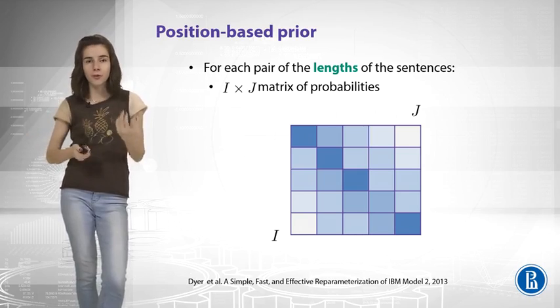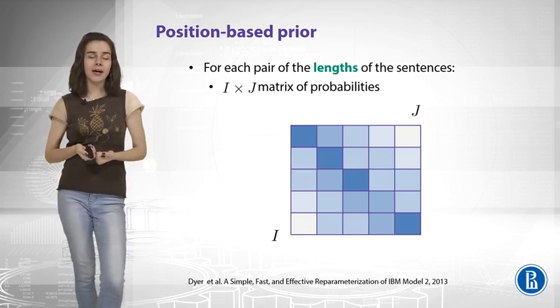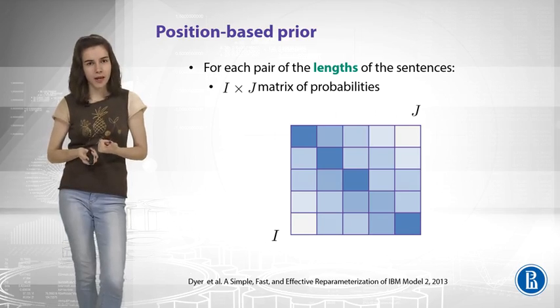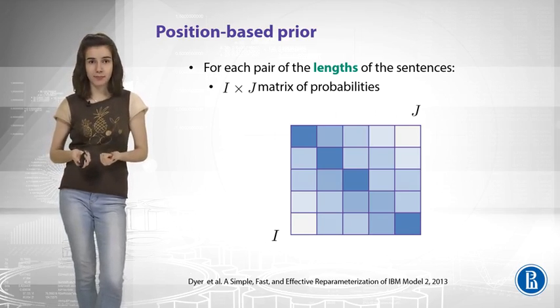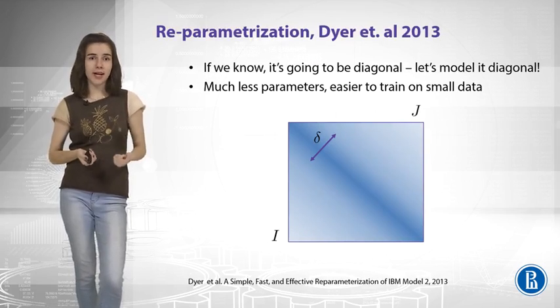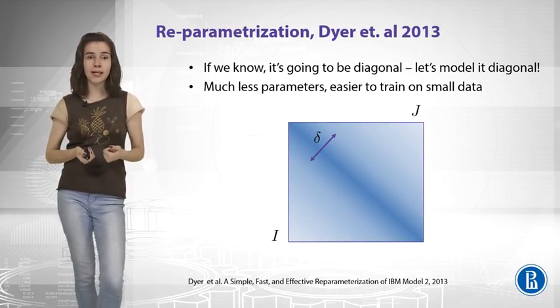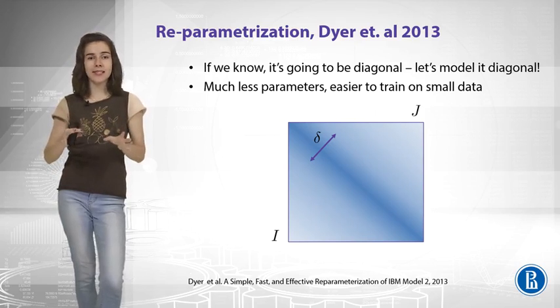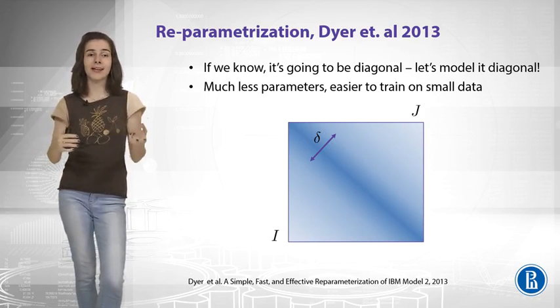And to try to improve on that, we can say, the matrix is usually very close to diagonal. What if we model it as a diagonal matrix? This is what Chris Dyer said in 2013. So this model has only one parameter that says how is the probability mass spread around the diagonal.